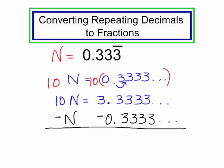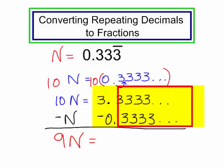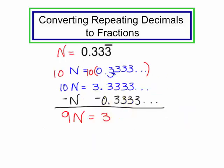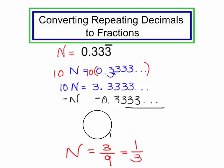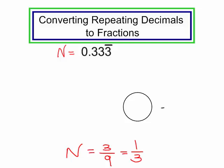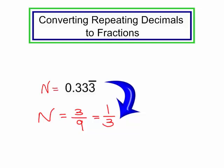What is 10n minus 1n? That is 9n. On the right side, 3.3333 minus 0.33333 is just 3. Now I have a simple one-step equation — divide both sides by 9. n is equal to 3 ninths, which reduces to 1 third. So the repeating decimal 0.33333 is the same as one-third. If you'd like, put 1 divided by 3 in your calculator and see what you get.